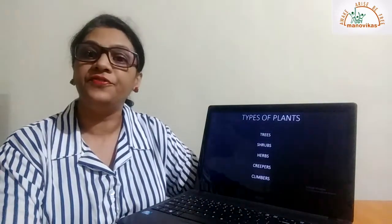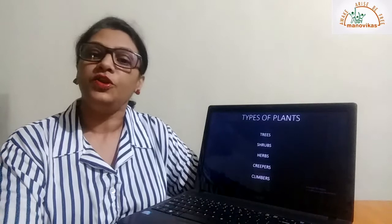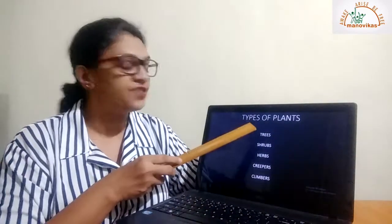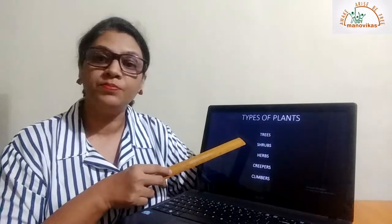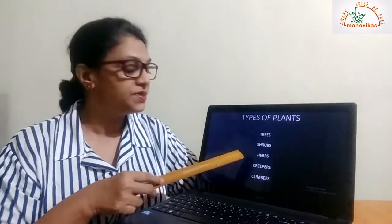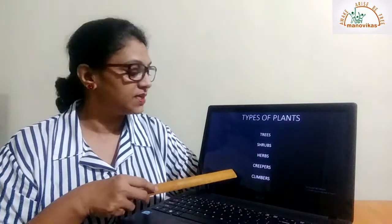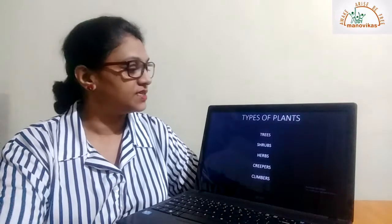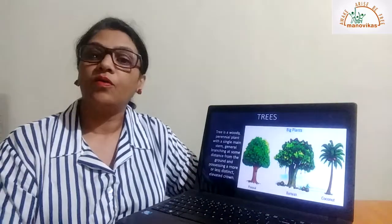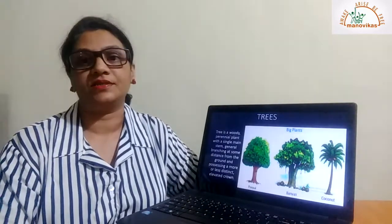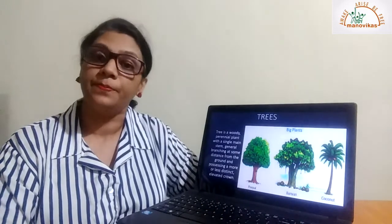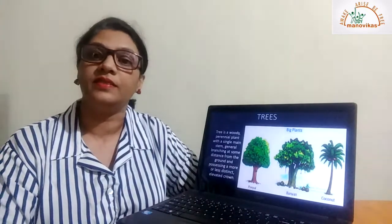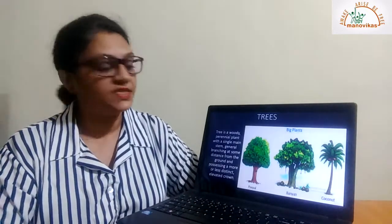First, let us study about the different types of plants. When you look around, what are the different types of plants that you see? We see trees, we see shrubs, we see herbs, we see creepers and climbers. Let us first take trees. What are trees? Trees are big plants that have a woody stem, which we call the trunk.